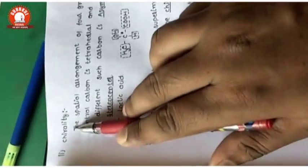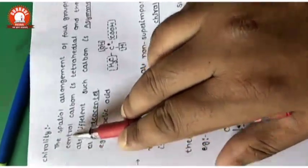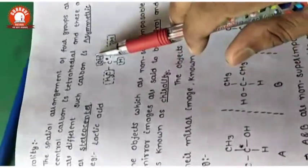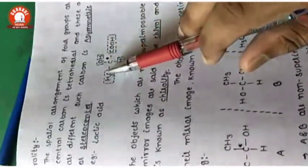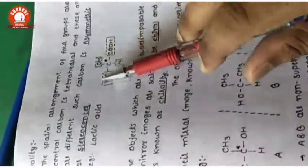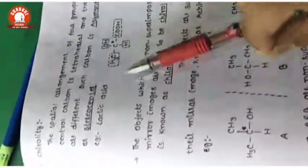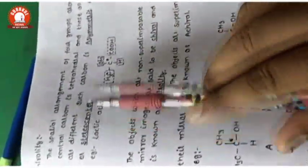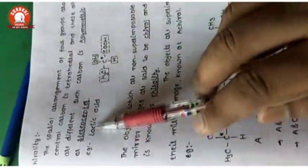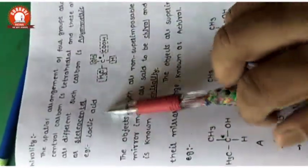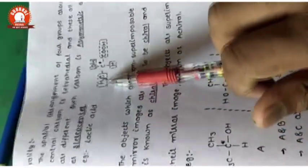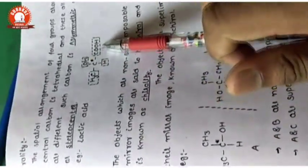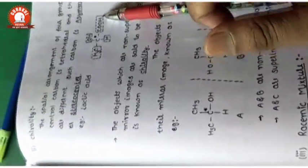Another term is chirality. A chiral carbon is one at which all four attached groups are different — it is also called an asymmetric carbon. An example is lactic acid, with formula CH3–CH(OH)–COOH.